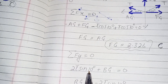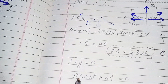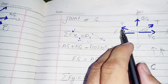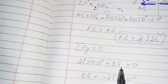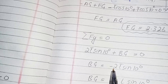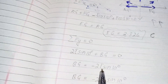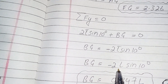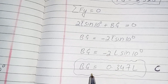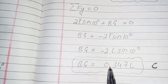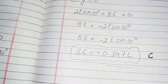Summation of all vertical forces at joint G equals zero: the vertical components of both tension cables — 2T·sine(10°) plus BG equals zero. So BG equals negative 2·L·sine(10°), which comes to negative 0.347L. The negative sign shows it is in compression.